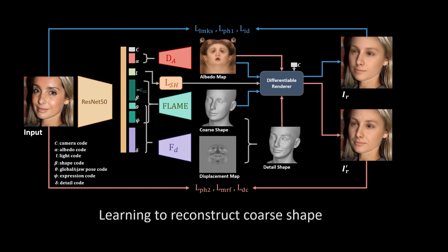Following the blue arrows, a differentiable renderer produces a coarse facial image. This is compared with the input image using a landmark reprojection loss, a photometric L1 loss, and an identity loss. These losses train the network to produce a robust and accurate coarse shape reconstruction.